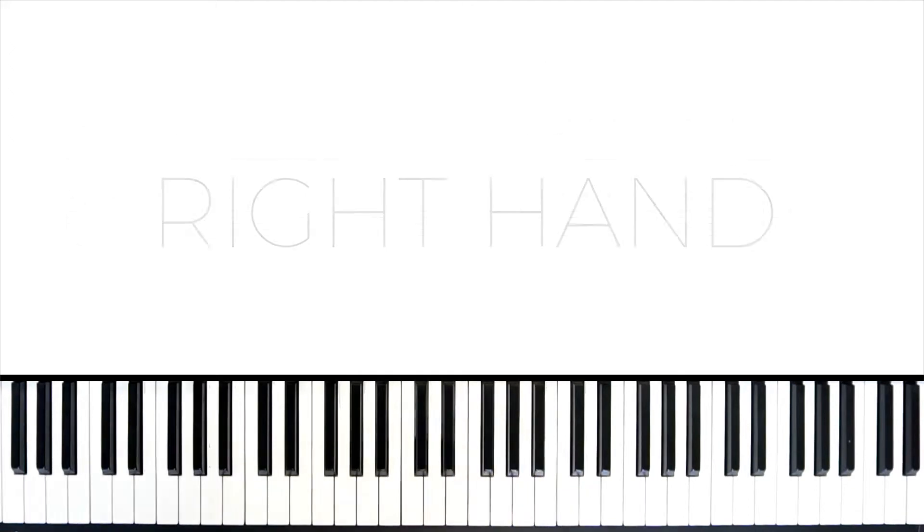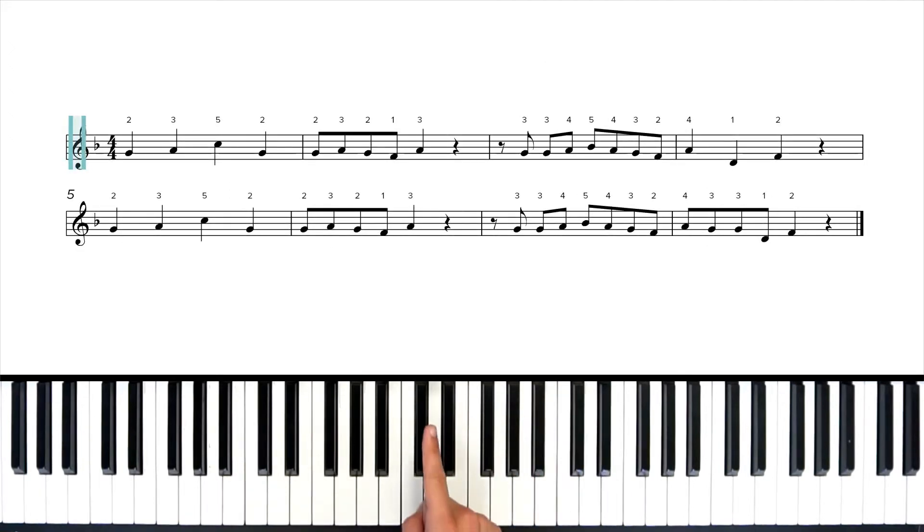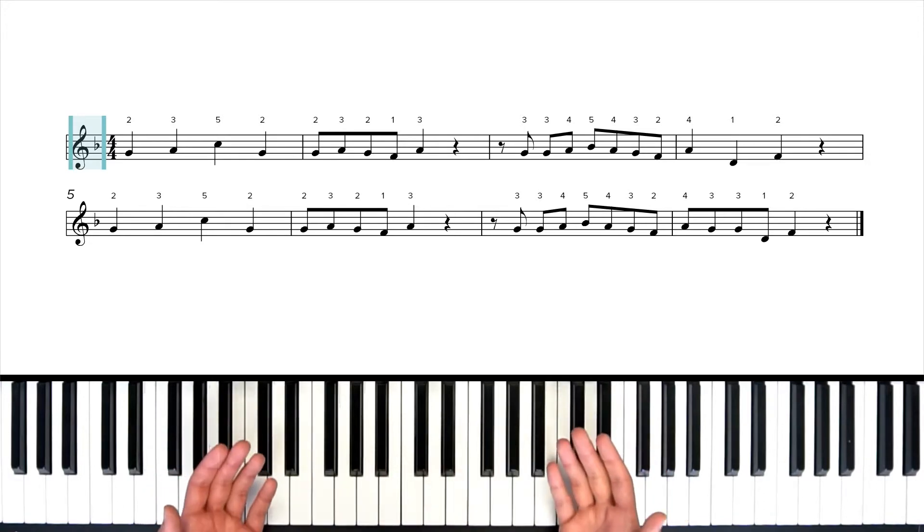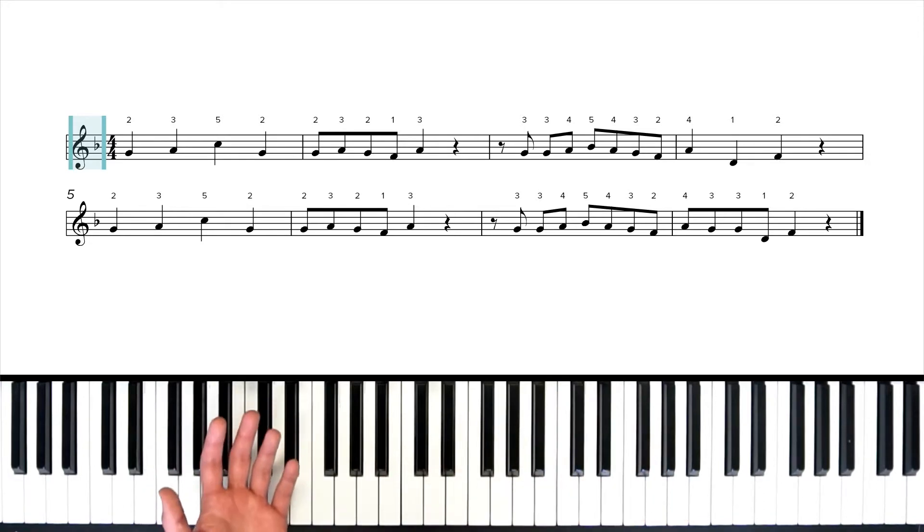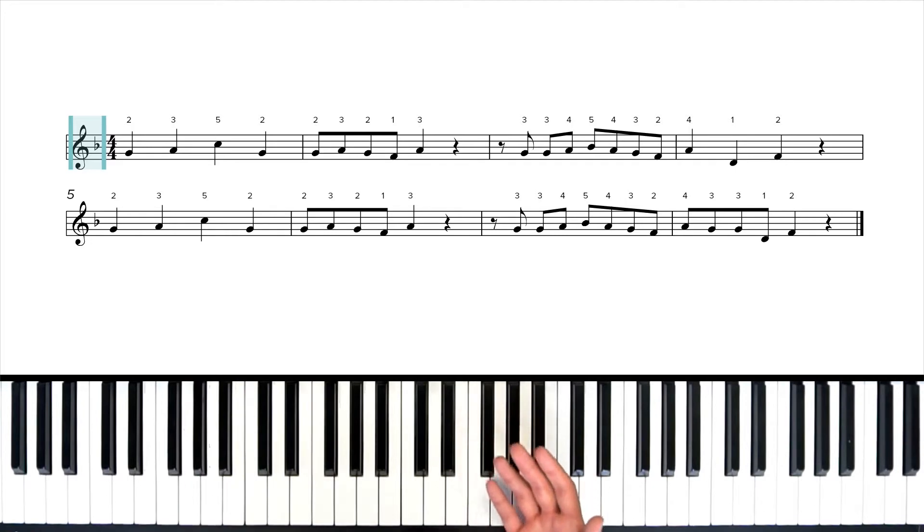Alright let's break down this right hand. First our key signature. We have one flat and that's a B-flat. That tells us that we're in the key of F major. Now it also could be D minor. Remember every major key has a relative minor that share the same key signature.